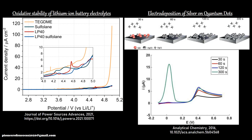Another example shows LSV used for electrodeposition systems. Here, red quantum dots serve as a substrate, and silver is being deposited onto their surface by an electrodeposition technique. As silver deposits, different peaks appear and grow over time — the increasing peak intensity is an indication of deposition progress. LSV thus allows visualization of deposition kinetics onto the surface.